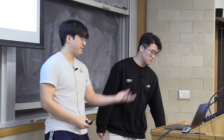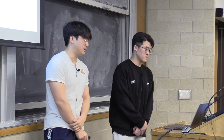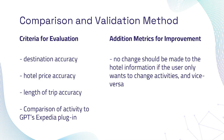To validate our system, we came up with validation criteria, mainly evaluated by human. We compare the destination, hotel price, and length of the trip — the three main factors of our preferences — against the generated plan and the user input. We also incorporated peer review suggestions and used the GPT Expedia plugin to generate example trip plans for the same inputs to compare results. For improvement evaluation, we added additional metrics: there should be no change to hotel information if the user only wants to change the activity, and vice versa.